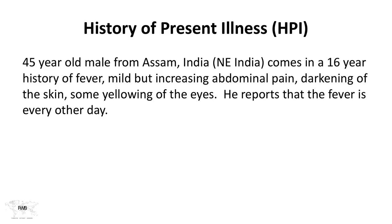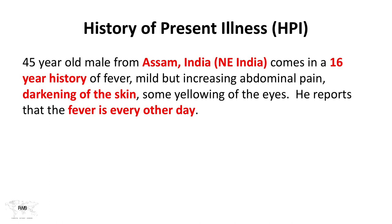This is a 45-year-old male from Assam, India. He comes in with a 16-year history of fever, mild but increasing abdominal pain, darkening of the skin, and some yellowing of the eyes. He reports that the fever is every other day. He's from Assam, India, so there are certain diseases prevalent in that area. The 16-year history is notable — this has been going on a very long time and he's still alive. He has darkening of the skin, and the fever is every other day.